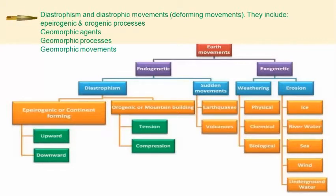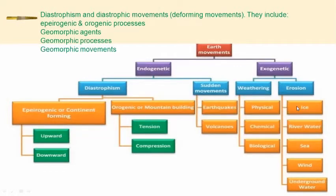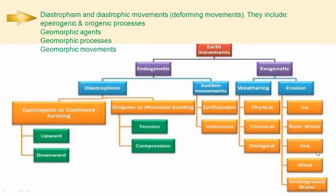Three kinds of work are done: one is removal of materials through erosion, then transportation — called mass wasting — where eroded materials are moved from one place to another, and then deposition somewhere else. These three things are done by the geomorphic agents.